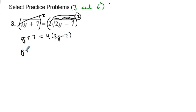So we have g plus seven is equal to, and now let's do our distributive property. So we have four times 2g, which is 8g, and then four times negative seven, which is negative 28.